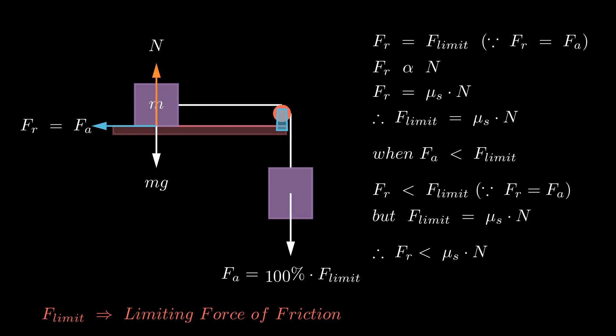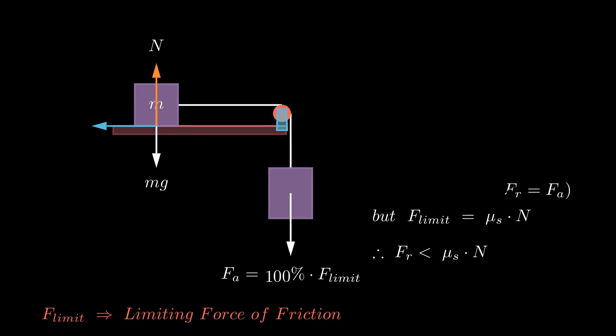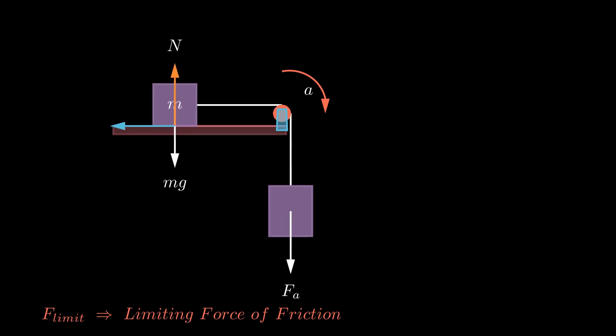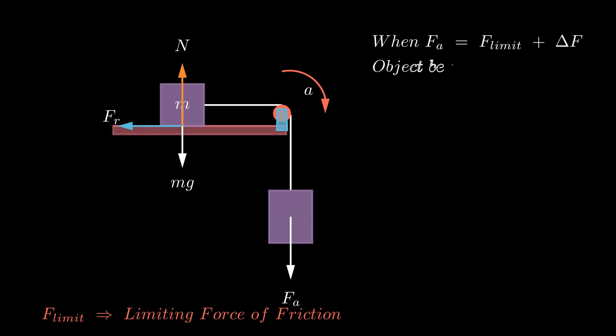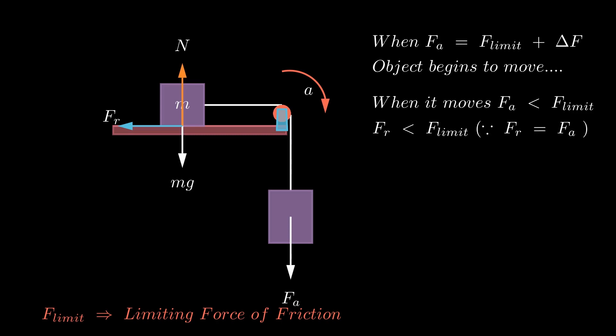However, when the applied force is equal to the product of the normal force and the coefficient of static friction, the object will start to accelerate. When we apply a bit more force than the limiting frictional force, that's when the object gets going. But once it starts moving, it doesn't need as much force to keep it going. What this tells us is that the force required to maintain the motion of an object on a surface with friction is less than the initial force needed to get it going. In simpler terms, when the object is already in motion, the friction it encounters is less than what initially held it back.